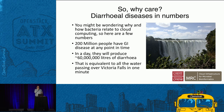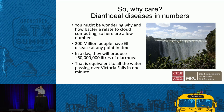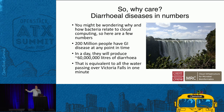Why care about diarrheal disease and how bacteria relate to the cloud? 200 million people on the planet have gastrointestinal disease at any point in time. To visualize that: they will produce in a day about 60 million liters of diarrhea — equivalent to all the water passing over Victoria Falls in one minute. If you were to stand next to Victoria Falls and watch it for six hours, you would have seen the volume of diarrhea produced by gastrointestinal disease by the human race in a year.